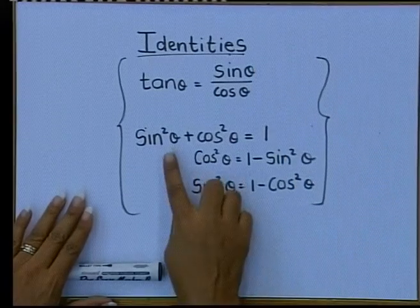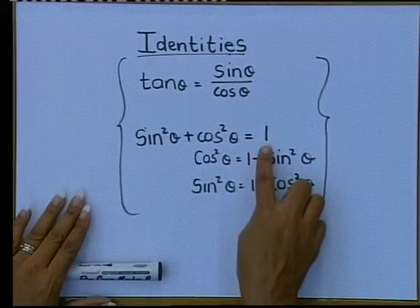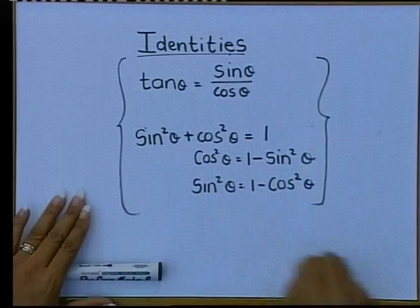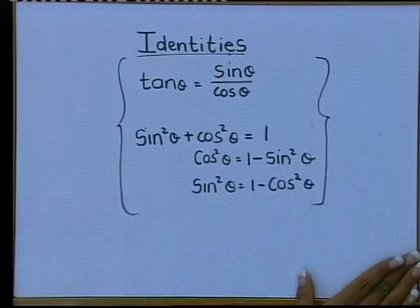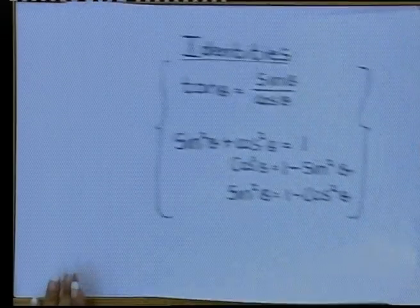I hope you get that now. I hope that everybody wrote down that tan is sin over cos. The next one is your square identity. Sin squared plus cos squared is 1. Cos squared is 1 minus sin squared. I just took the sin squared over, and sin squared is 1 minus cos squared. With this, you can go try our first identity.